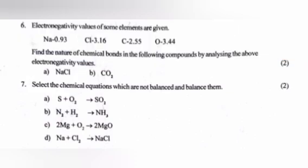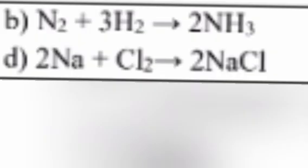Question 7: Select the chemical equations which are not balanced and balance them. Answer: B. N2 plus 3H2 gives 2NH3. D. 2Na plus Cl2 gives 2NaCl.